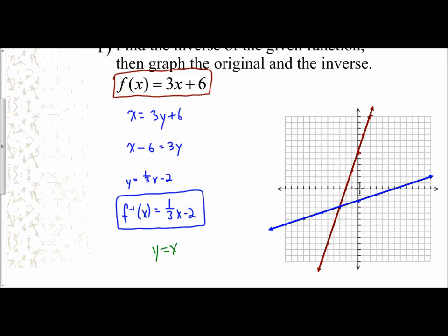And y equals x has a y-intercept of 0 and a slope of up 1 over 1. But I'm not going to go up 1 over 1 the entire time. I'm going to go up 12 over 12. And then I can go down 12 over 12. And that gives me my line of symmetry.